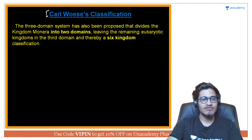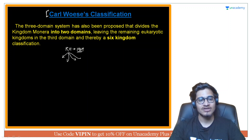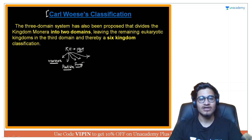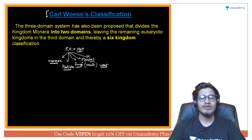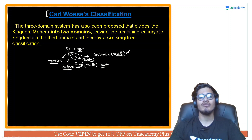Ab hum content ki taraf badhte hain. We will be talking about the Karl Woese system of classification — but first, let's see what RH Whittaker had done. In 1969, Whittaker converted all organisms into five basic kingdoms. The first kingdom was Monera, which contained prokaryotic organisms. The second kingdom was Protista, containing unicellular eukaryotic organisms. The third kingdom was Fungi — saprophytic or parasitic organisms, mostly multicellular except yeast (Saccharomyces), which is unicellular. Then Plantae — autotrophic, usually multicellular but exceptionally unicellular. And finally Animalia — all multicellular organisms showing holozoic, heterotrophic nutrition.